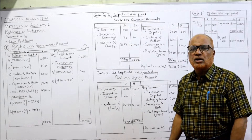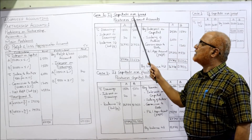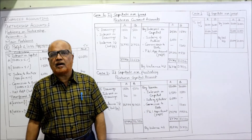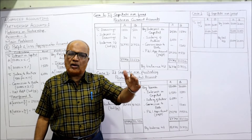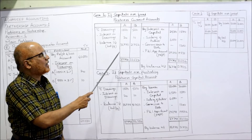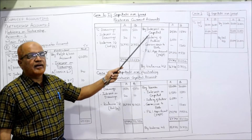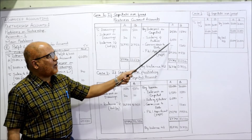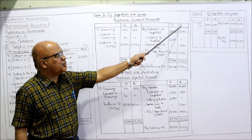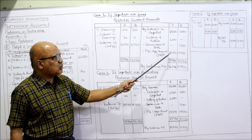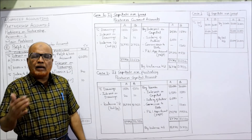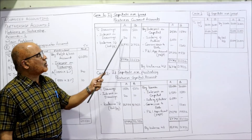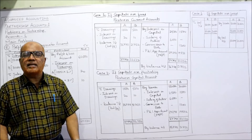Now the two cases. First case: if capitals are fixed. When capitals are fixed, all adjustments are done in the current account - the capital account is kept separate. In the current account, credit side includes interest on capital (2,500 for Author, 1,500 for Book), salary for Author, commission to Book of 1,200, and share of profit (29,298 for Author, 19,532 for Book). Debit side takes drawings and interest on drawings.